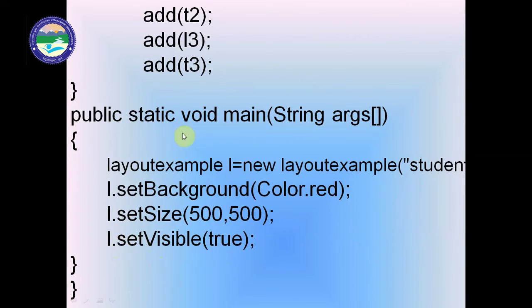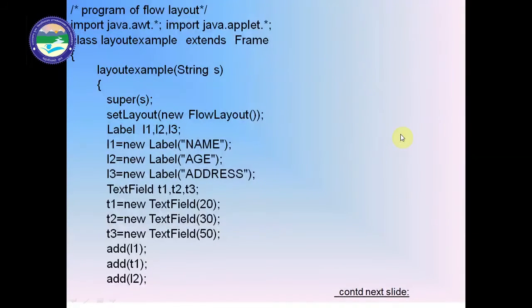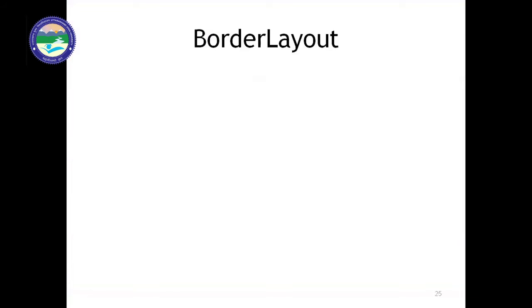When we call l.setVisible(true), the frame becomes visible and the labels and text fields are displayed on this LayoutExample frame. The frame title is "Student". In the previous program, output was shown on an applet; here it appears on a frame. These are two programs demonstrating flow layout implementation.